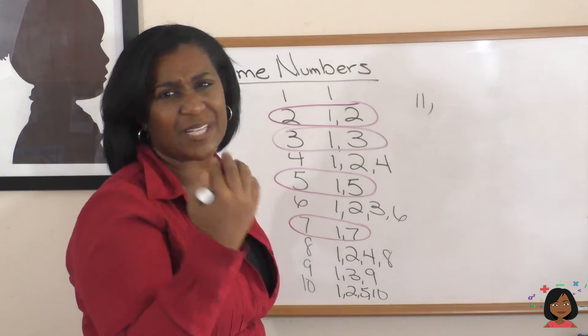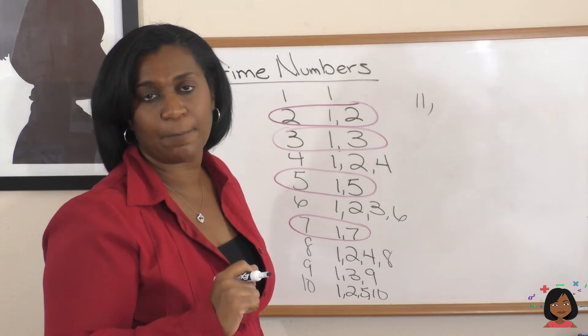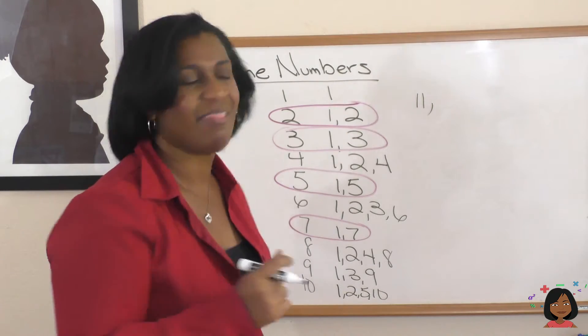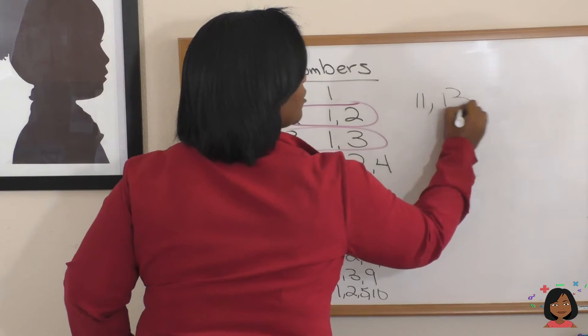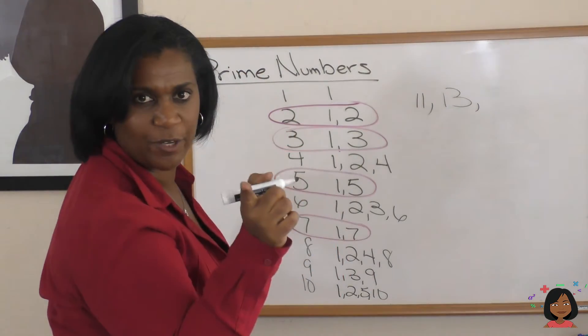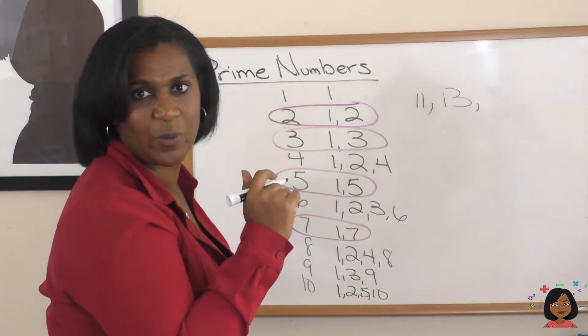What about 12? Nope, 12 has numbers like 2 and 3 and 4, not a prime number. 13? That's a prime number. Only 1 and 13. 14? Nah, 7 and 2 go into that.